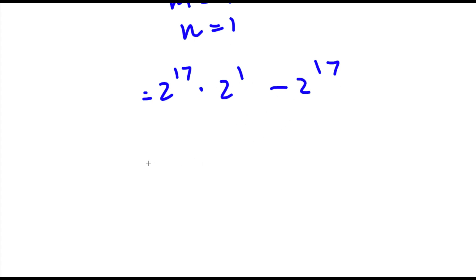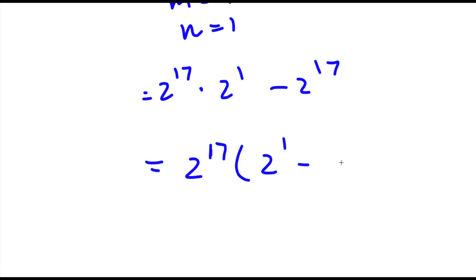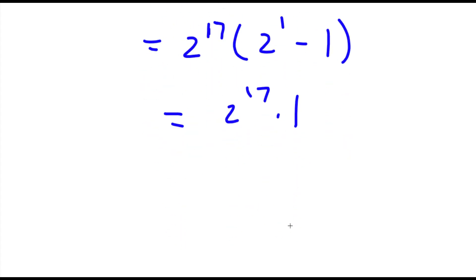Now from here I can go ahead and factor out 2 to the power of 17. So now I have 2 to the power of 17 times the quantity 2 to the power of 1 minus 1. Now 2 minus 1 is going to be 1, so now I have 2 to the power of 17 times 1.